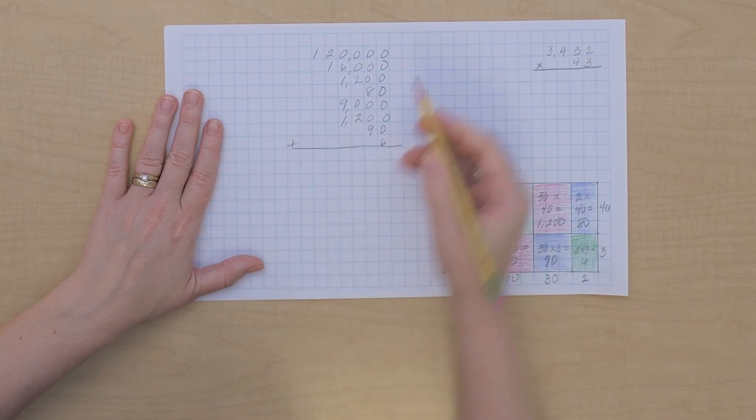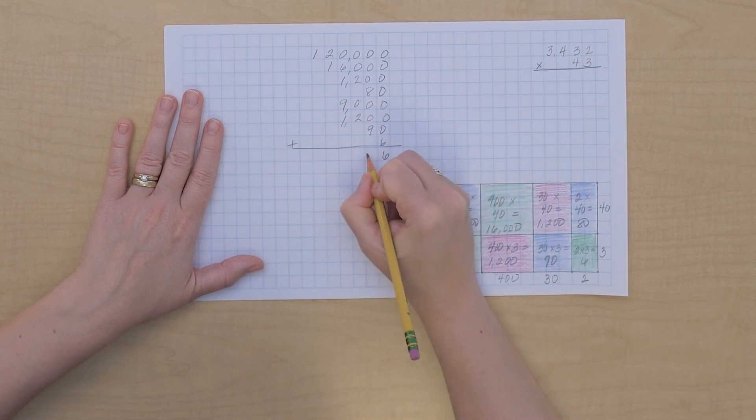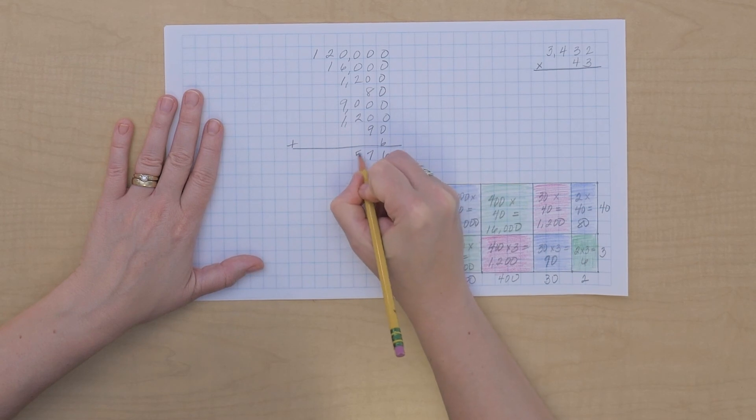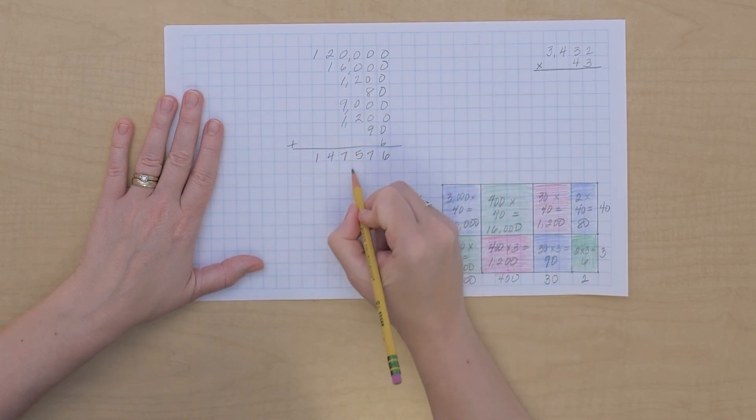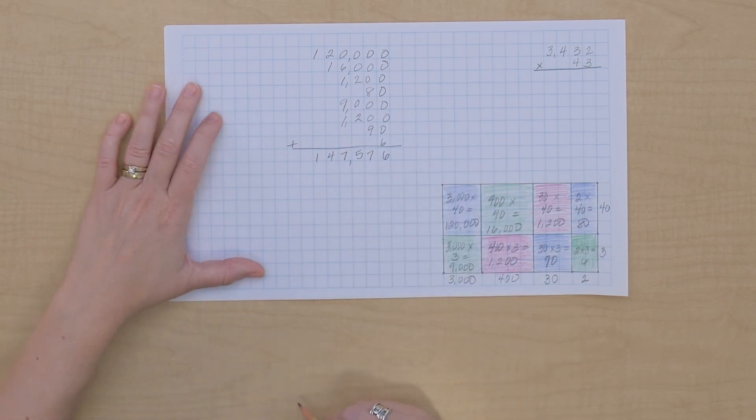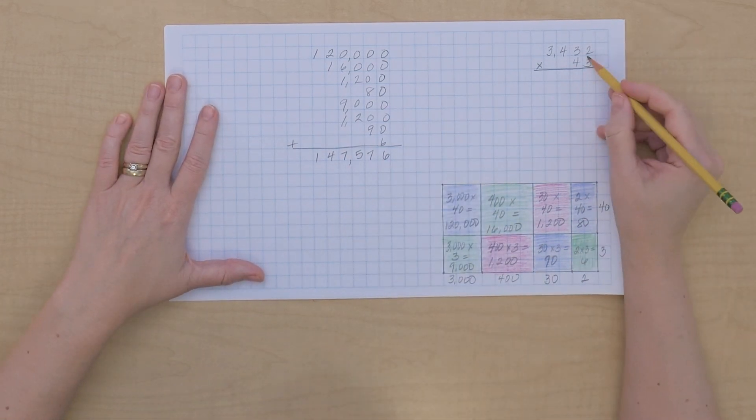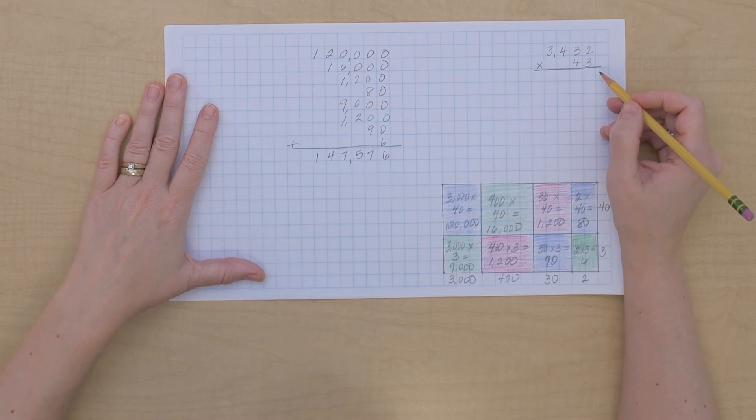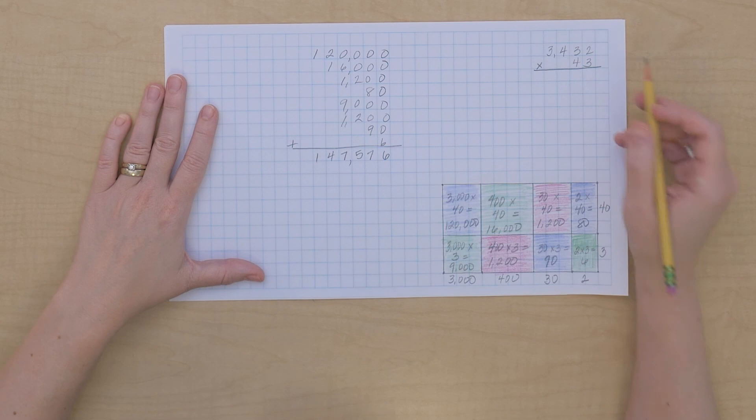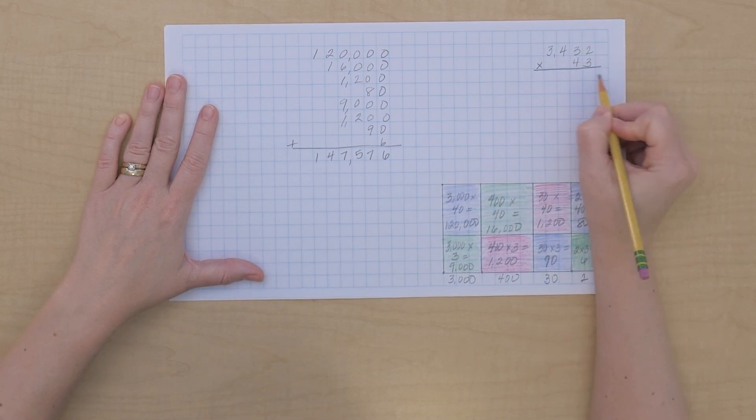Let's do that addition. So 3432 times 43 gives us 147,576.